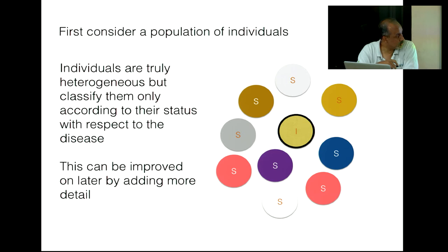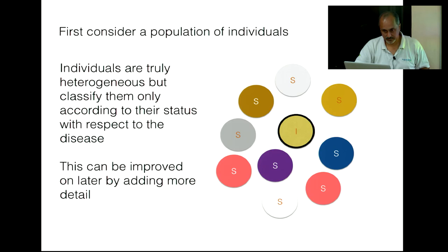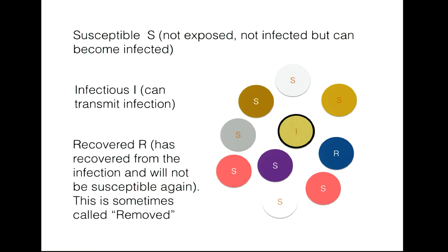A susceptible individual is one who is not infected but could become infected—they are not immune. An infectious individual can transfer the disease from person to person through bacteria or viruses. The recovered individual has recovered from infection, is well again, and will not become susceptible again. Sometimes this class is called 'removed' because a person can also exit the infectious class by dying and thus be removed from the population. The terms recovered and removed can be used interchangeably.